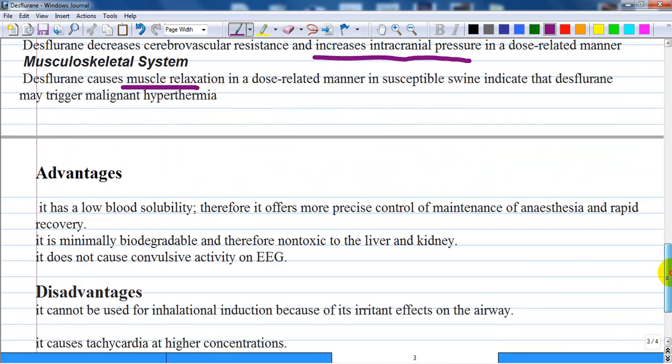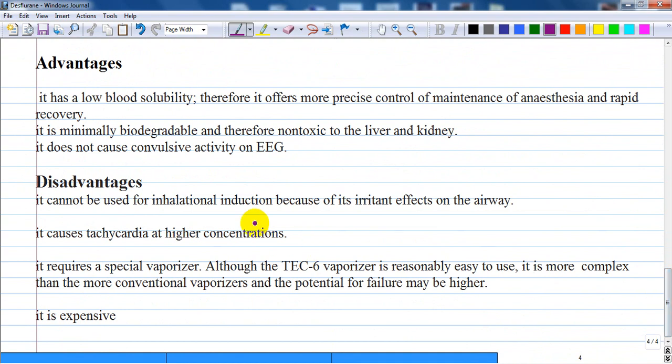And lastly, advantages and disadvantages. Therefore, in summary, desflurane offers some advantages over other agents. It has low blood solubility, therefore it offers more precise control in maintenance of anesthesia and rapid recovery. It is minimally biodegradable.